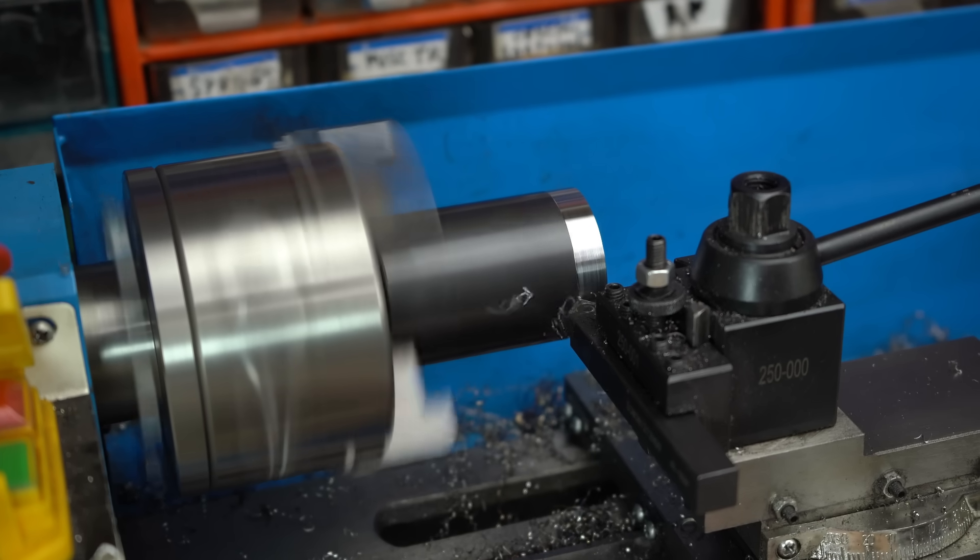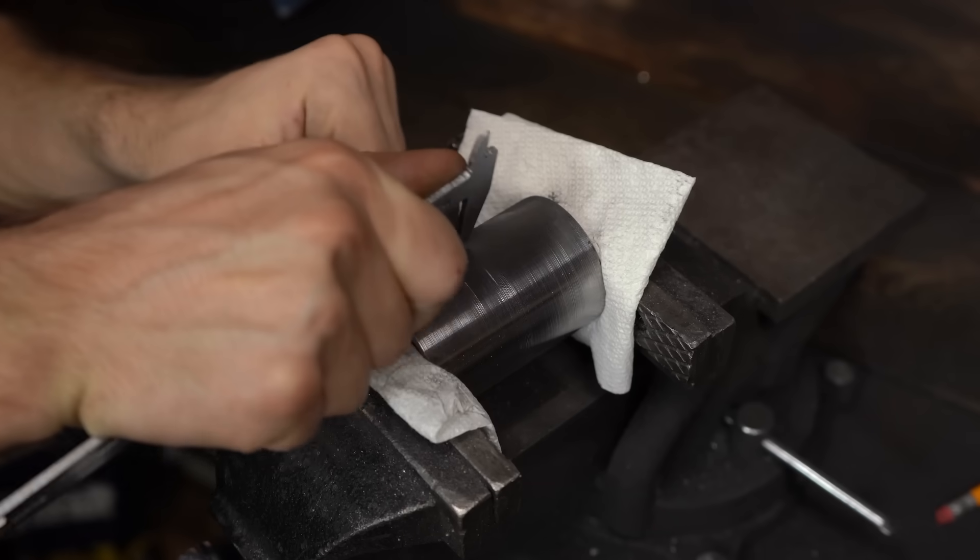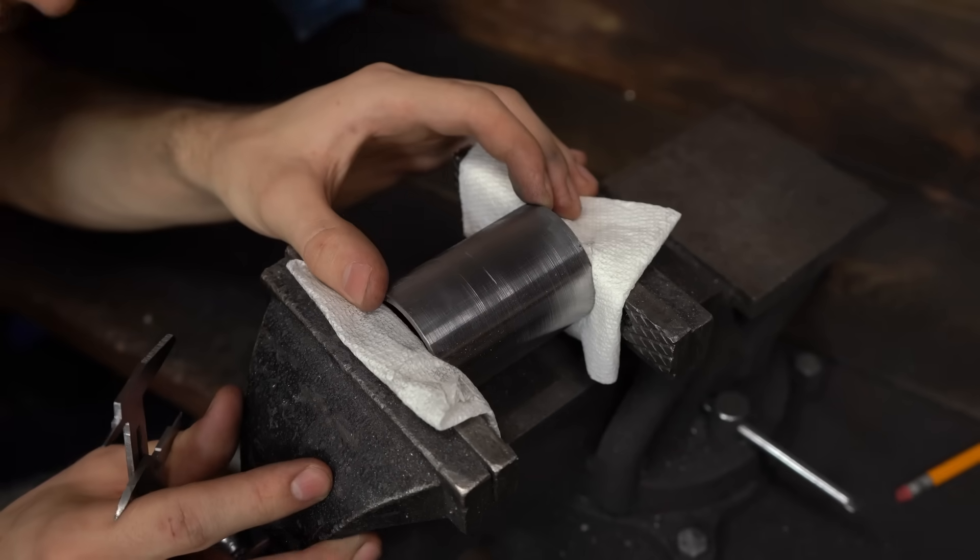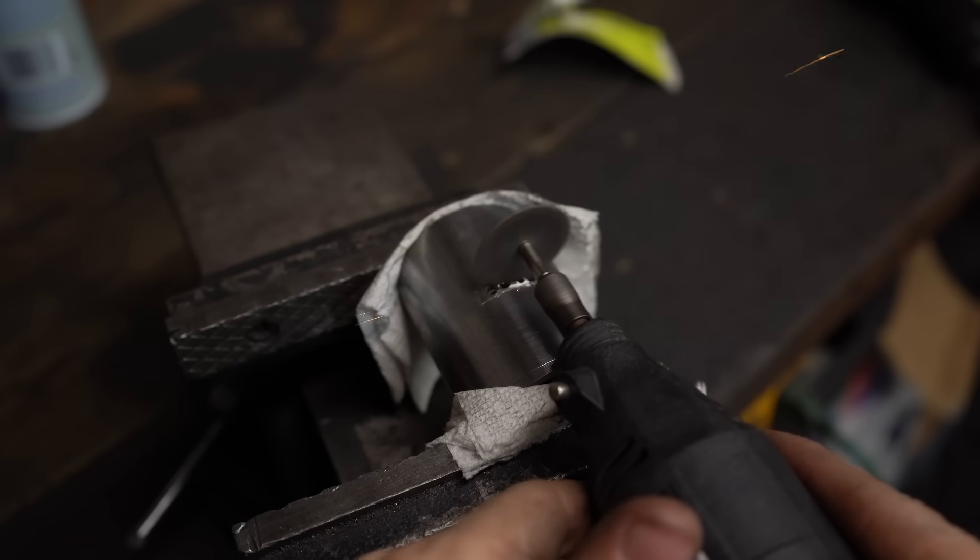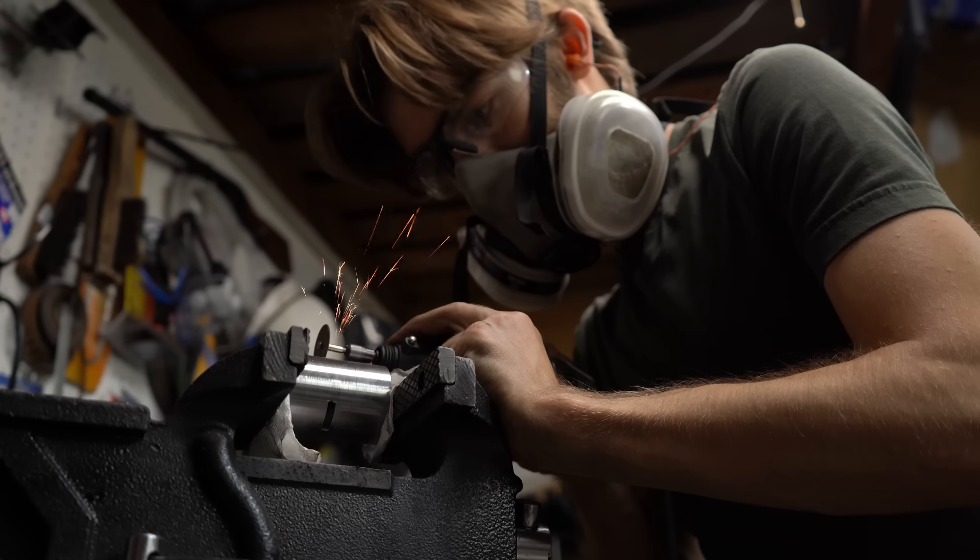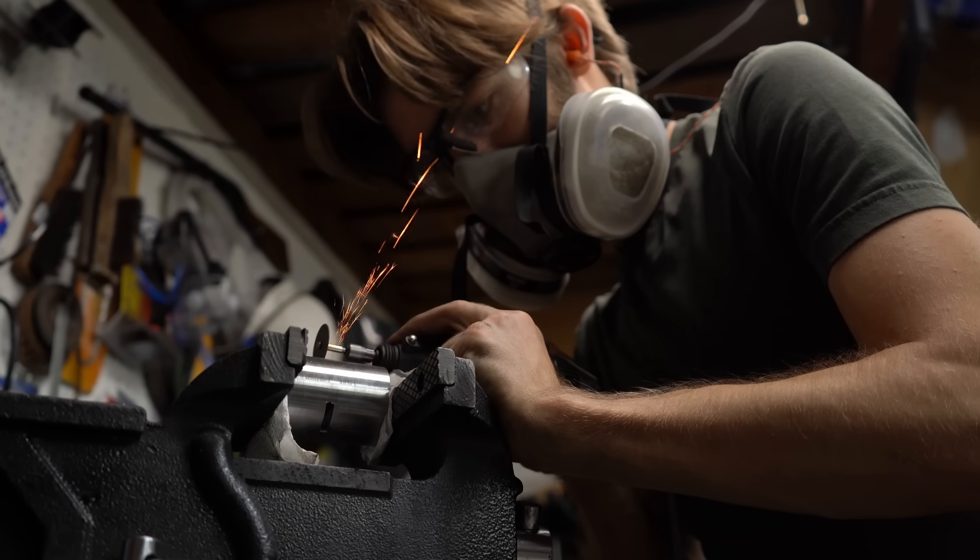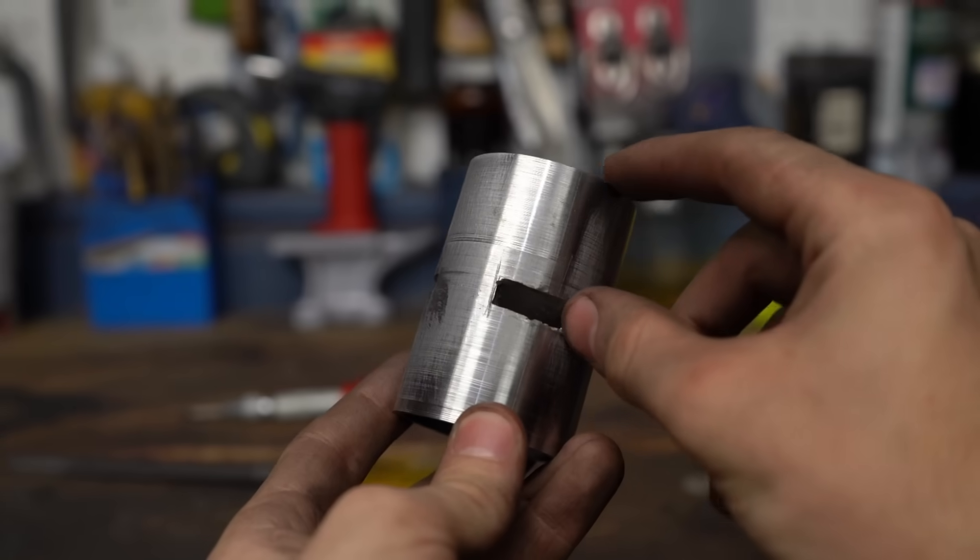After cleaning up the pipe on the lathe, next I went on to cut all the ports. And for the most part, it was going pretty well, but just as I was cutting the exhaust port, I managed to put it in the completely wrong spot.